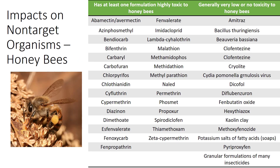Non-target organisms include all plants, vertebrates, invertebrates, and microorganisms in or near a treated area that are not the intended target of a pesticide application. Pesticides can injure non-target organisms directly or indirectly. Direct poisoning harms non-target organisms that encounter pesticides during application or directly afterward by coming into contact with harmful residues. For example, pesticides applied while bees are foraging in the treated area can harm them and other pollinators near the application site. The table on the slide lists examples of pesticides that are highly toxic to bees and those with low or no toxicity.